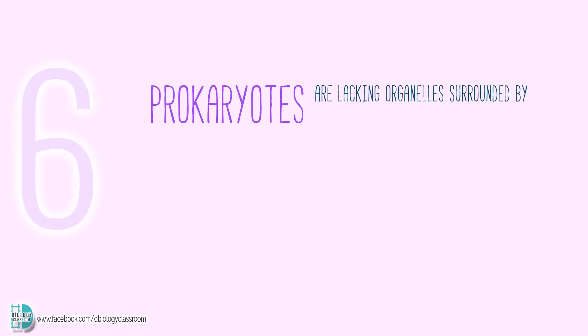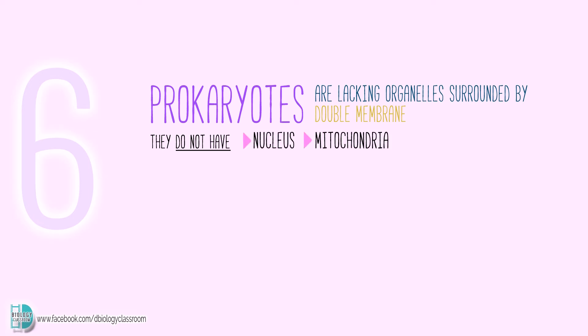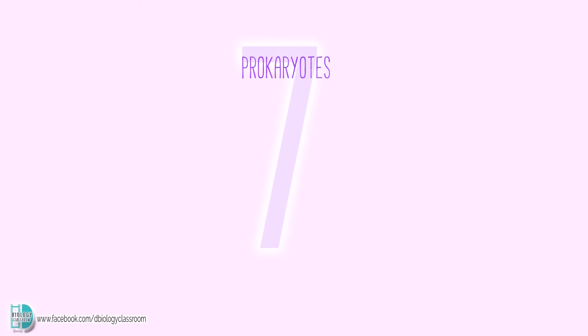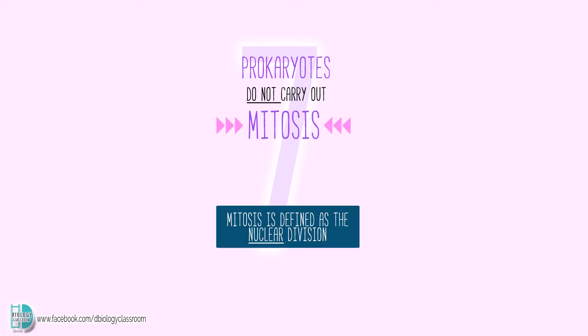Prokaryotes lack organelles surrounded by a double membrane, so they do not have a nucleus, mitochondria, or chloroplasts. With that said, prokaryotic cells do not carry out mitosis, as mitosis is defined as nuclear division. They divide by binary fission.